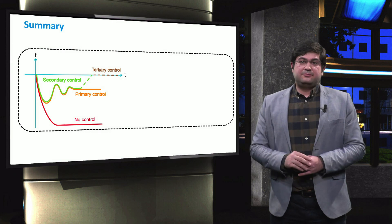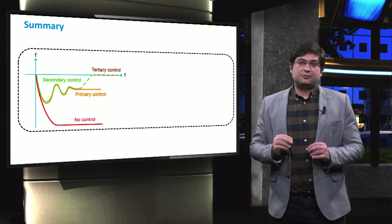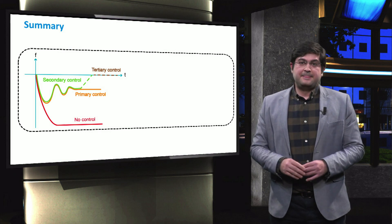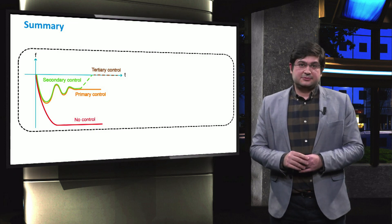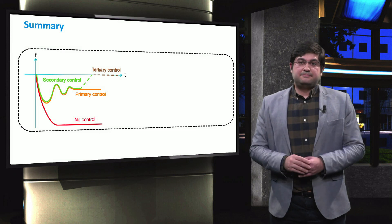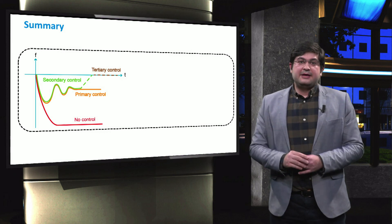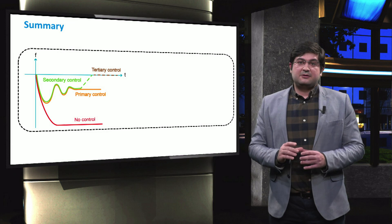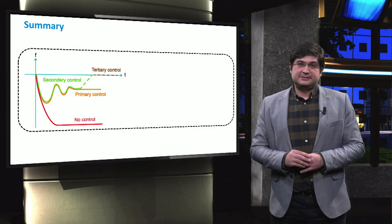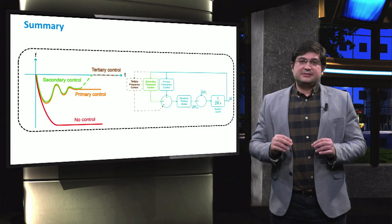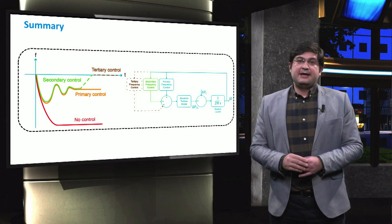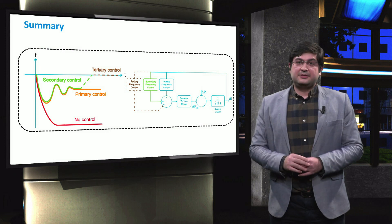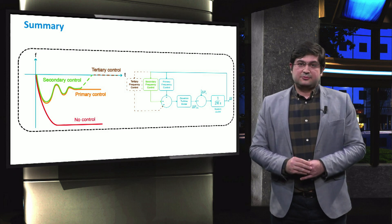In this video, we address the role of the secondary control in a power system and how it is implemented in a two-area network by the bias factors. This control plays a vital role in recovering the frequency to the nominal values after a disturbance. We also discussed that the tertiary control is executed to mitigate and adjust the steady state deviation of power using the participation factors.